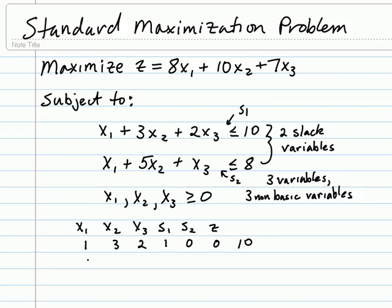The second constraint gives us the coefficients 1, 5, 1 for x sub 1, x sub 2, and x sub 3. There is no s sub 1 variable, so its coefficient is 0. There will be an s sub 2 variable with a coefficient of 1, no z variable, and a constant of 8.